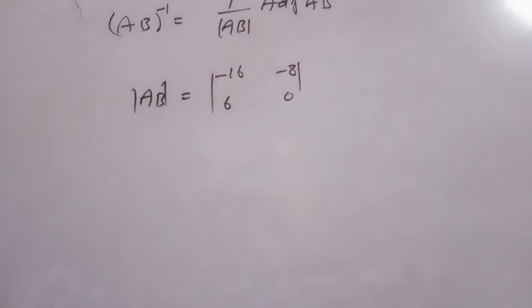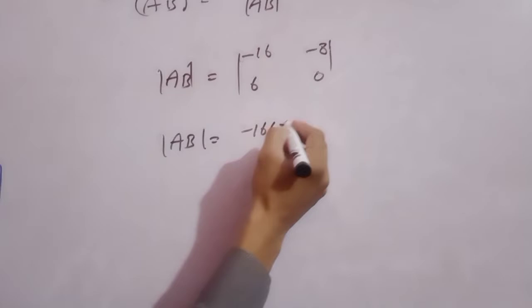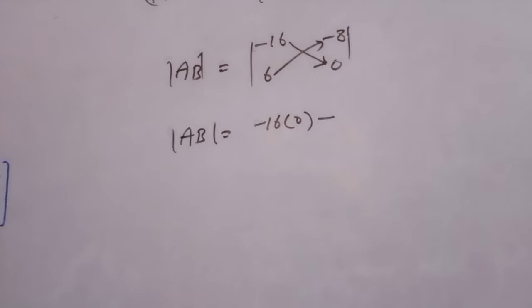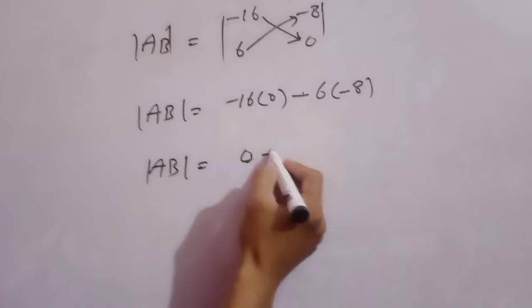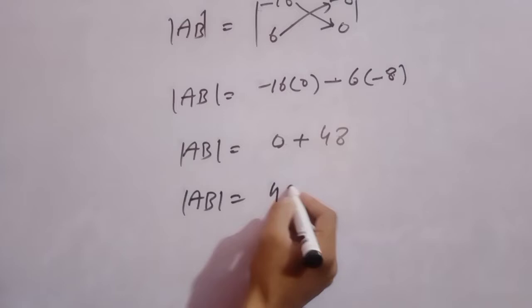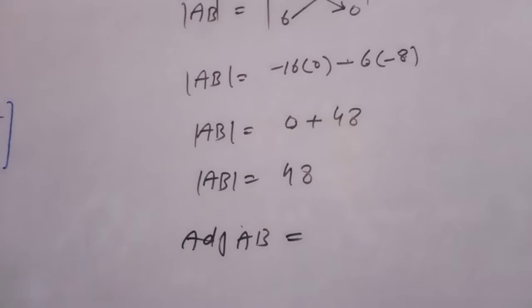det(AB) equal to minus 16 multiply 0 — यह इसके साथ multiply है — minus: 6 multiply minus 8. Det(AB) equal to 0 minus minus plus 6 × 8 = 48. det(AB) equal to 48. अब हम AB का adjoint find करते हैं।